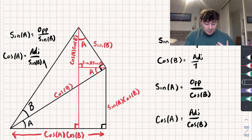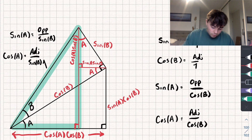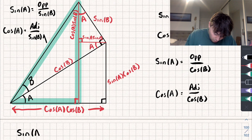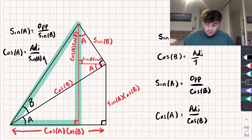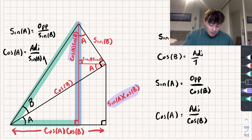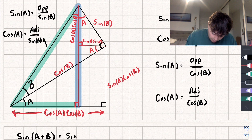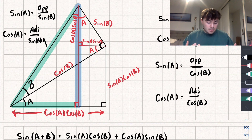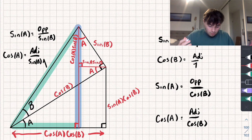Now we actually have enough information to write down the angle addition formulae. We're going to focus on this right angle triangle here, and you'll notice that one of the angles is equal to A plus B. So let's calculate sine of A plus B — that's equal to the opposite side, which is sine of A cosine of B plus cosine of A sine of B, divided by the hypotenuse, which is equal to 1.